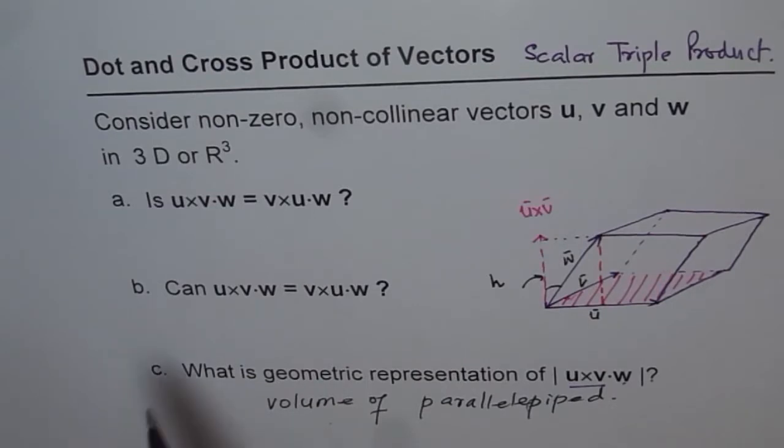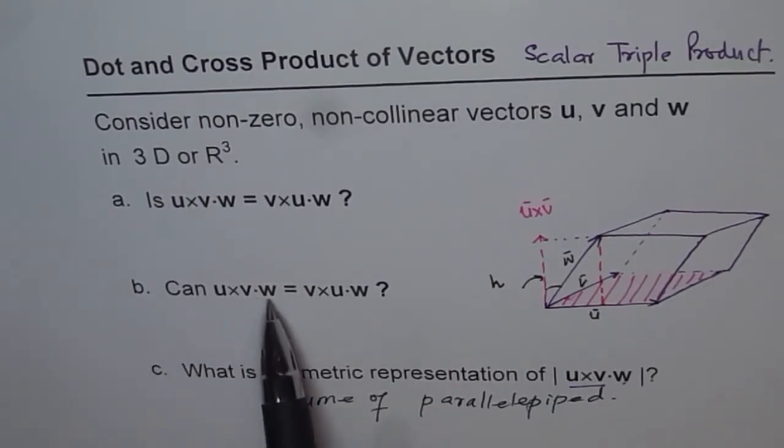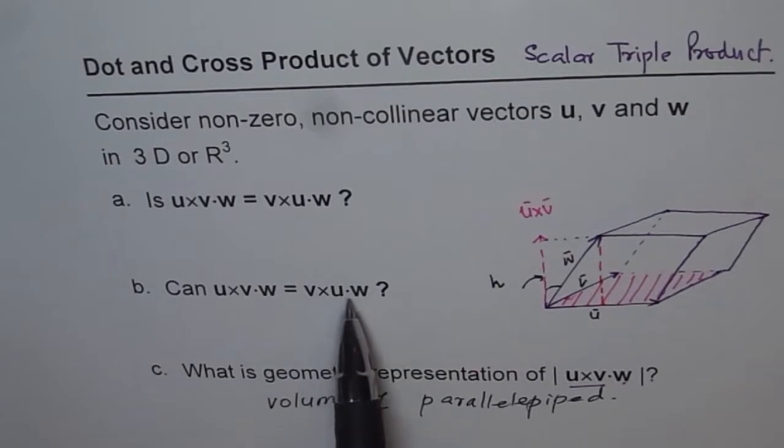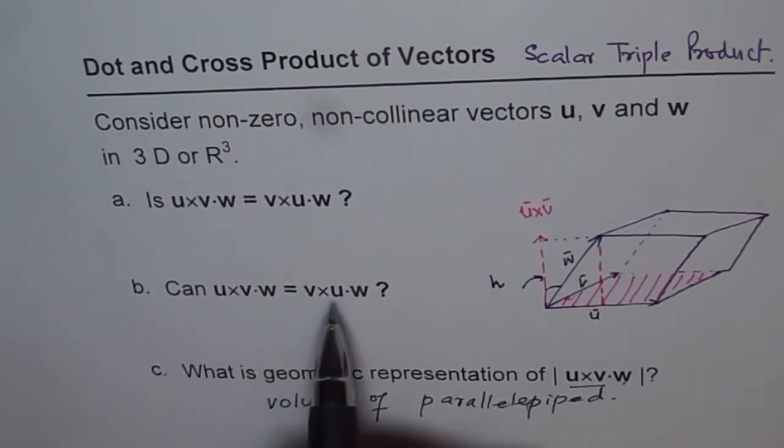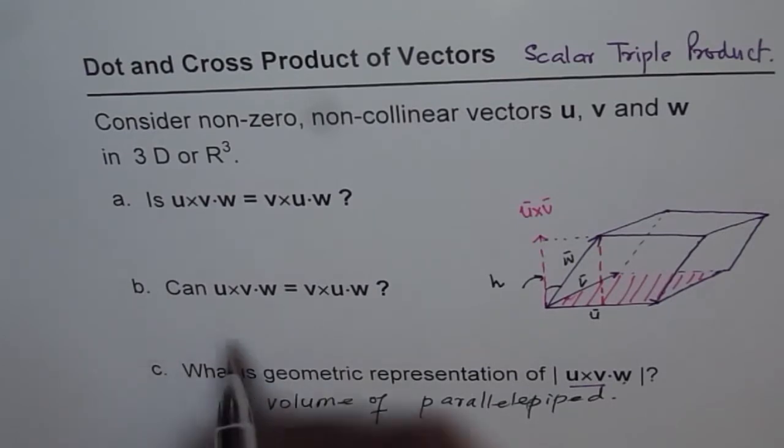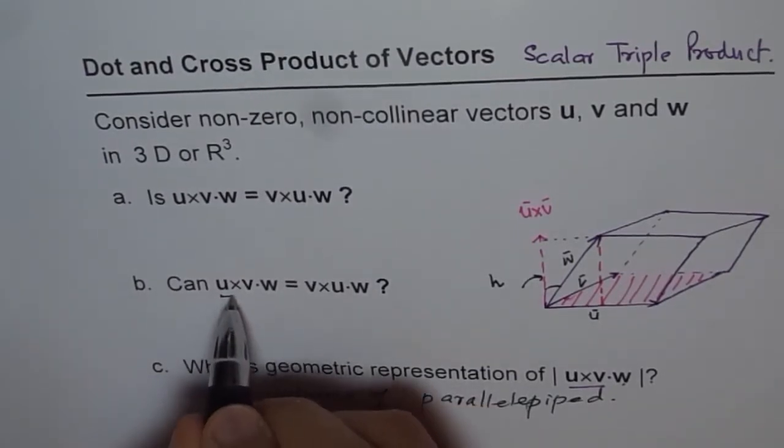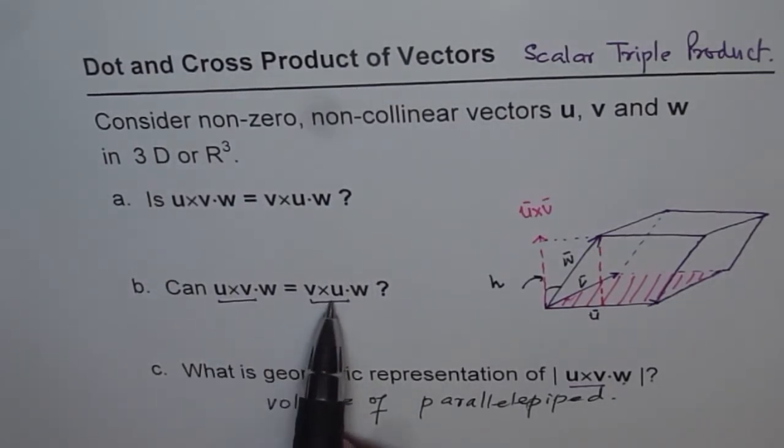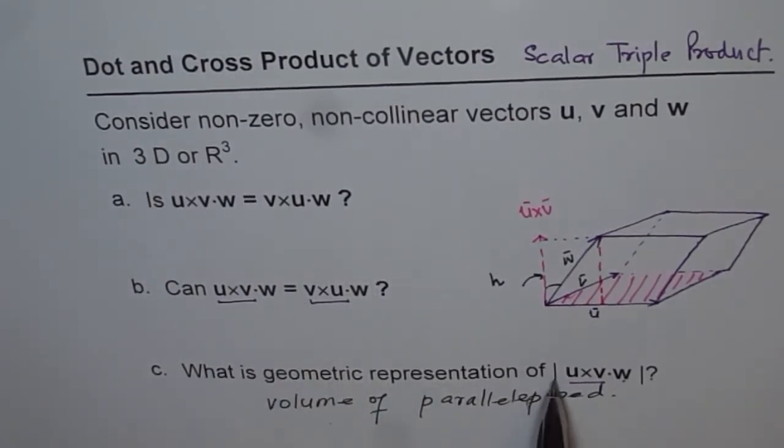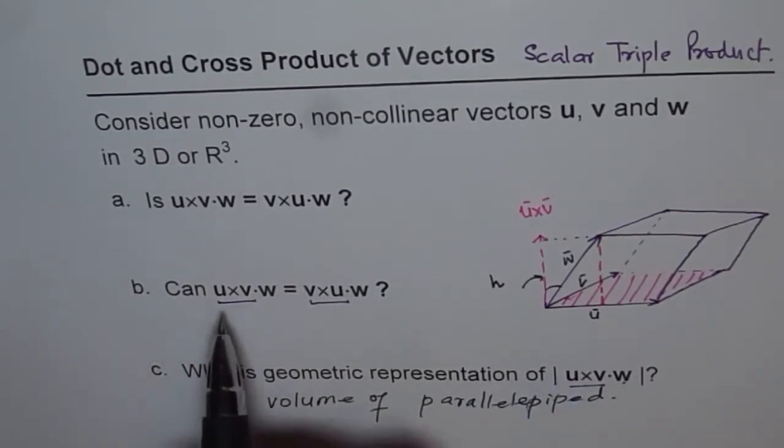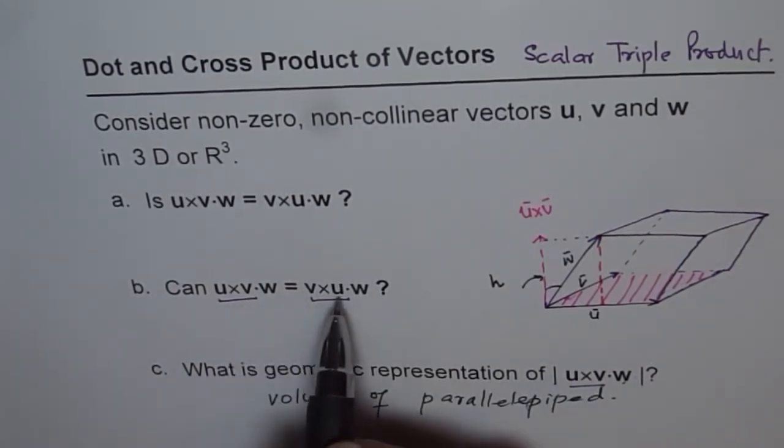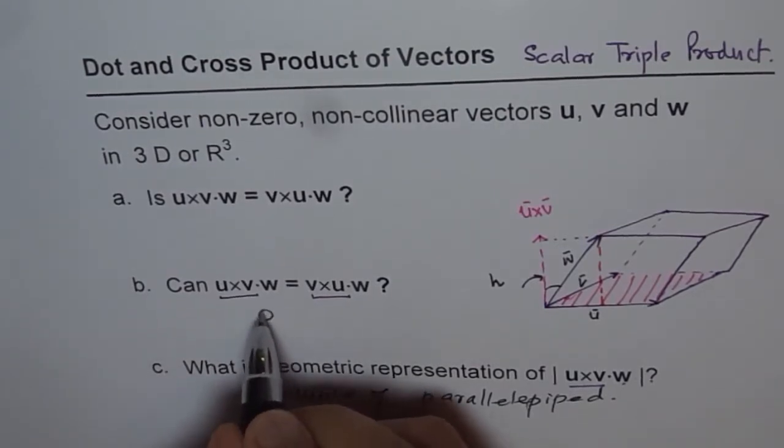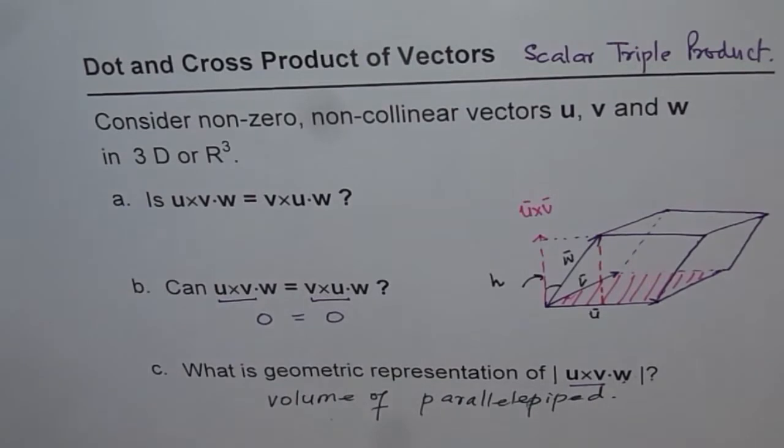Now, let us go to question number B here. Can u cross v dot w equals to v cross u dot w? Now, well, what we are trying to do here is trying to find whether this is equal or not. Well, this is only equal because we know u cross v and v cross u are not equal. Now we are not considering magnitudes. These are not just the magnitudes. This was magnitude as a whole. Now, in this case, yes, they can be equal. They can be equal if we get 0 here and 0 there. Then they can be equal.